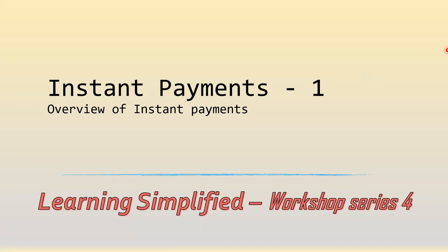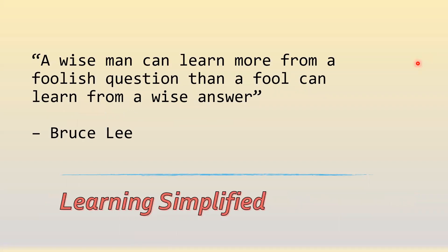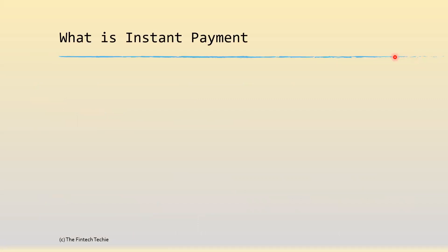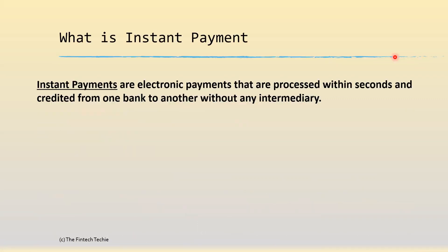Welcome everyone to the fourth workshop series. This is the first session of the series, which covers instant payments. In the first part, we're going to have a look at the overview of instant payments — what exactly is an instant payment. As the name suggests, instant payments are electronic payments that are processed within seconds and credited from one bank to another without any intermediary. While the definition may look very simple, what happens behind the scene is often very complicated and may differ from network to network.